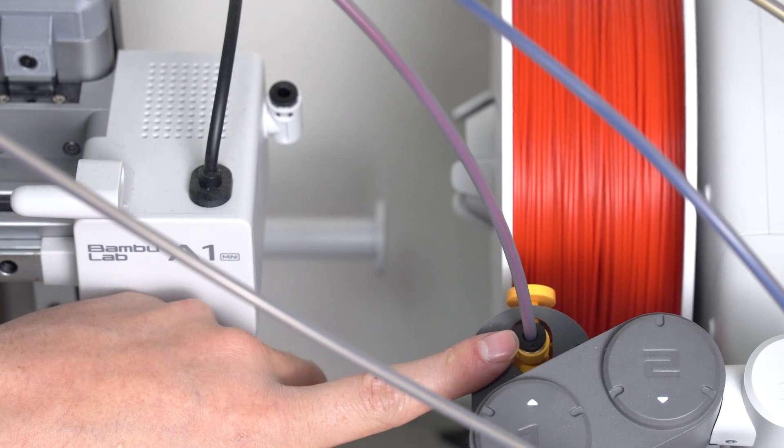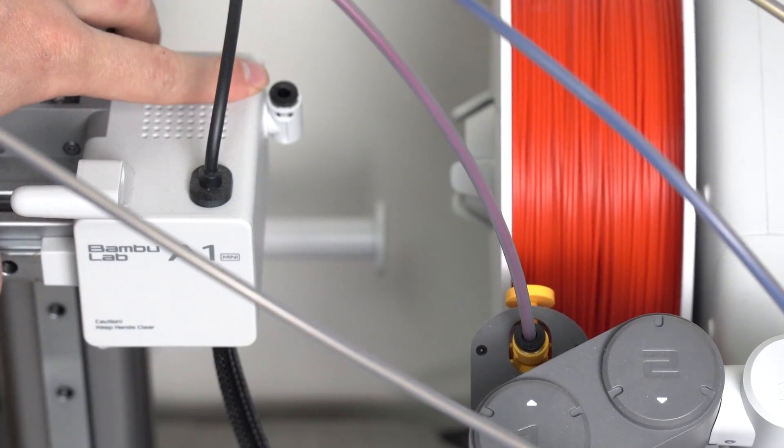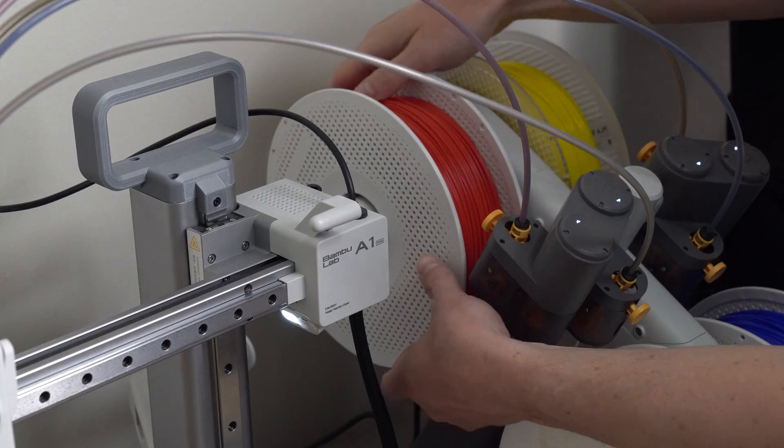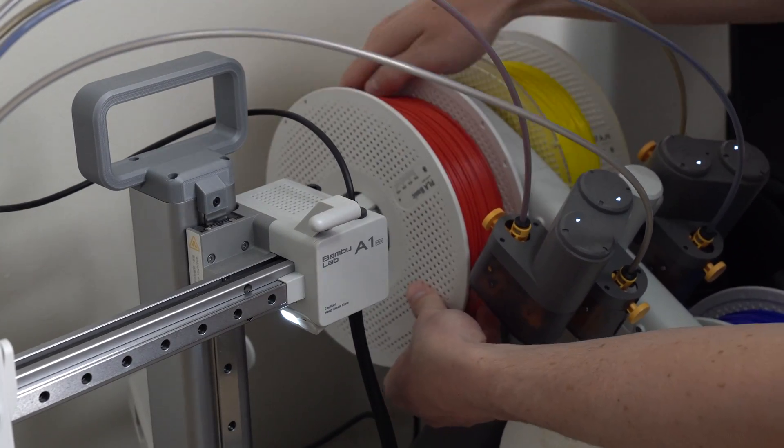We're basically just going to steal the PTFE tube from your first slot on the AMS light and transfer it over here. In order to do that, we just need to remove all the filament that's in the PTFE tube and we can just wind that back by hand.